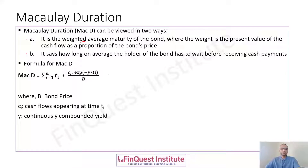The formula for Macaulay duration: B is the bond price, Ci are the cash flows on the bond — which include periodic interest and the principal payment at maturity — Ti are the individual time points, and y is the continuously compounded yield. We sum all of these individual discounted cash flows together to arrive at Macaulay duration.